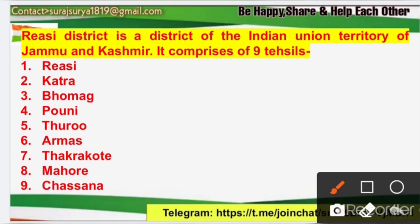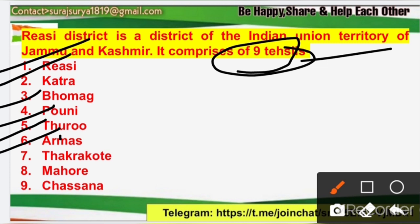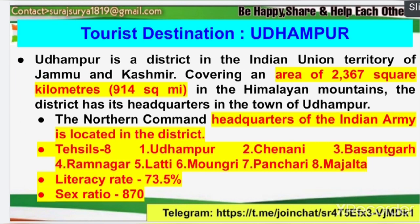Dear learner, let's first address something from our previous lecture, which covered the Riasi district and Ramban district. I made three mistakes in that lecture related to the Riasi district, and I would like to correct those mistakes. I apologize for the typing mistake — when I studied it I showed it incorrectly. So now we have all corrected that, and today we start this wonderful lecture on the important districts of our Jammu and Kashmir Union Territory.